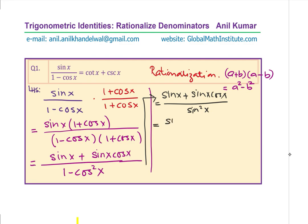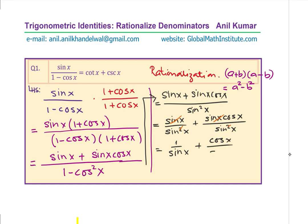We can split this up and write it as sin x over sin squared x plus sin x·cos x over sin squared x. Cancelling one sin x, we simplify to 1 over sin x plus cos x over sin x. Since 1 over sin x is cosecant x and cos x over sin x is cotangent x, that gives us the right hand side. That is how we have proven the very first identity.